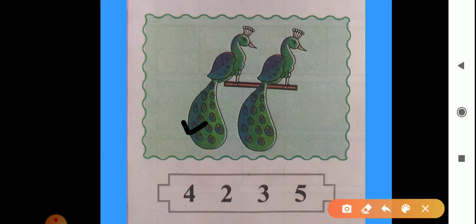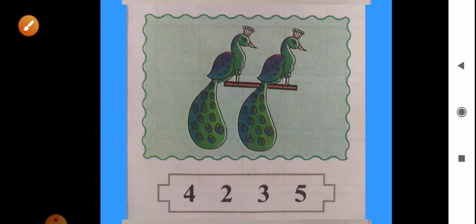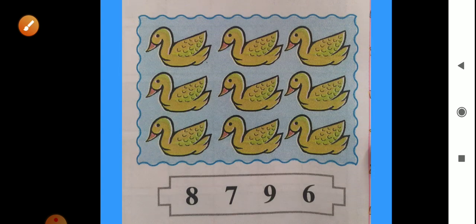This is 1 and this is 2. So we circle the number 2. Okay. Now look next exercise. What is here? Good. Here are ducks.